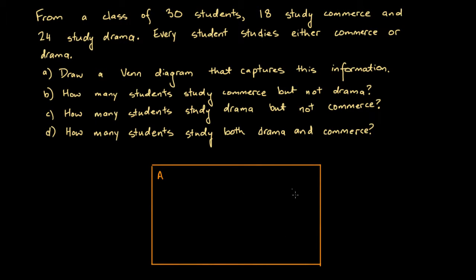One of the questions we need to answer is: do we want these regions to overlap? In other words, will there be some students who study both drama and commerce? A good way of figuring this out is to go back and look at our numbers. Every student studies either commerce or drama. We've also said that 18 students study commerce and 24 students study drama. Let's imagine that every student who studies commerce only studies commerce — they don't study drama — and every student who studies drama only studies drama — they don't study commerce.